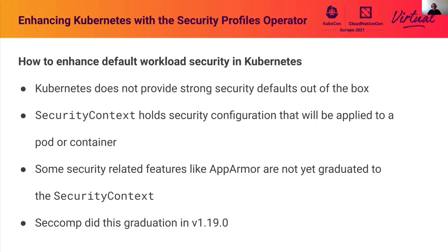How to enhance default workload security in Kubernetes? Kubernetes does not provide strong security defaults out of the box — it has been designed for usability over security. For example, if we decide to restrict the syscalls of a workload, that may break applications while making others more secure. Security-related decisions must be considered by system administrators, site reliability engineers, and application developers, and those different roles make it hard for the community to decide which default position is most important.